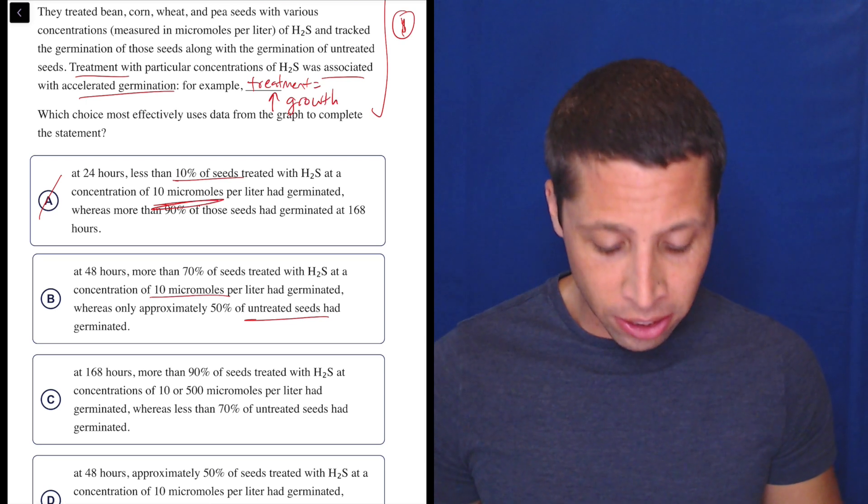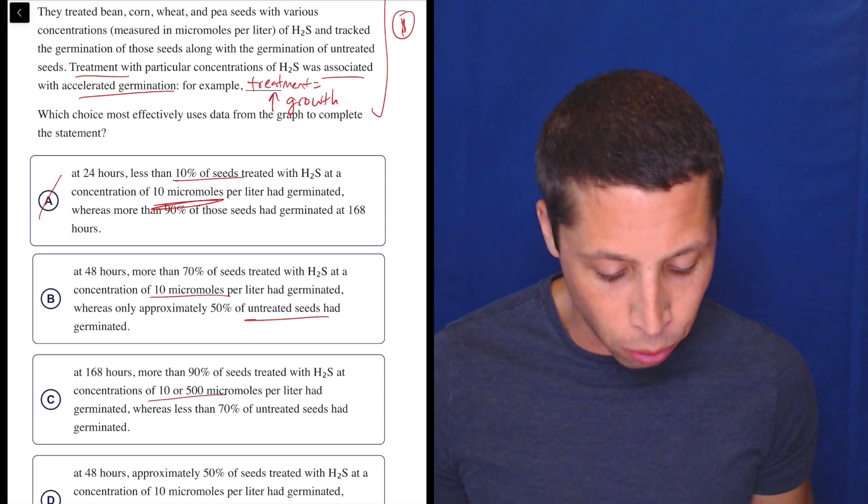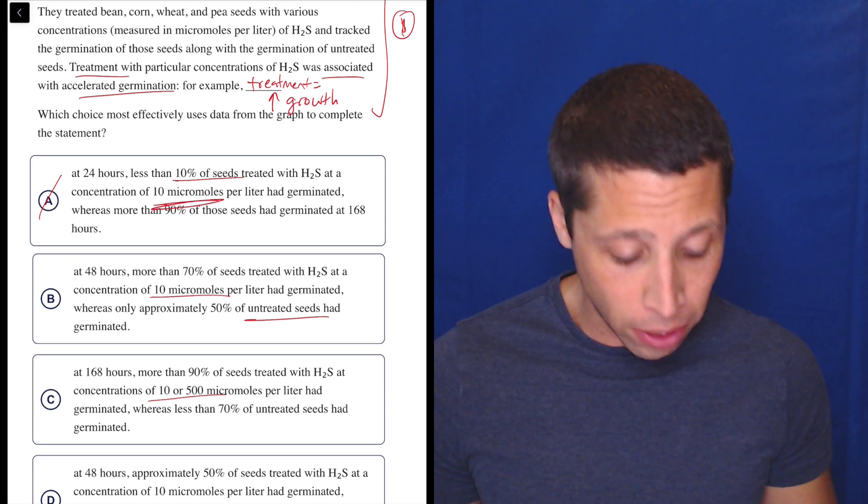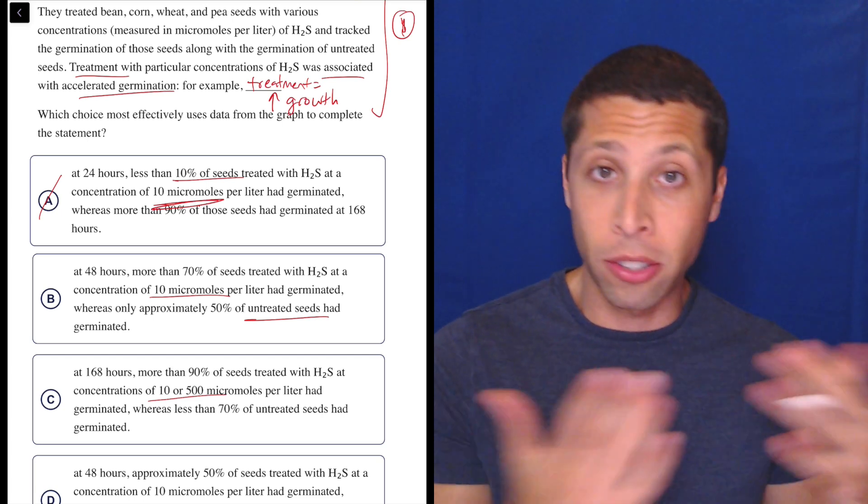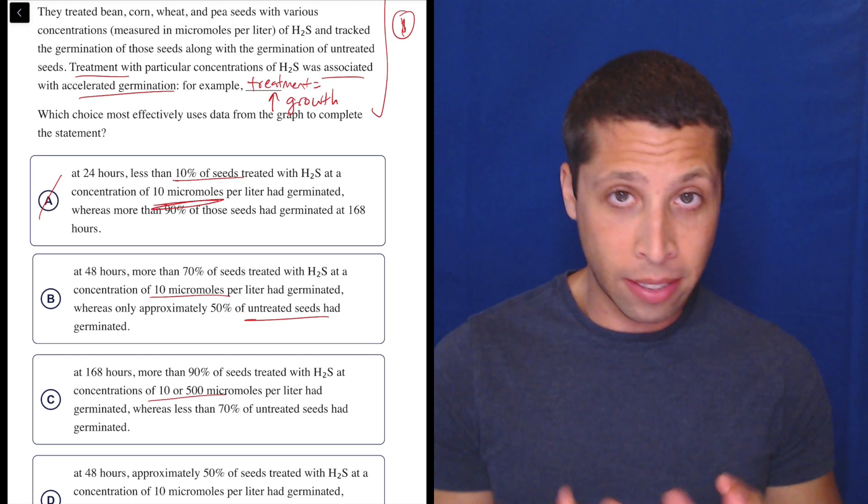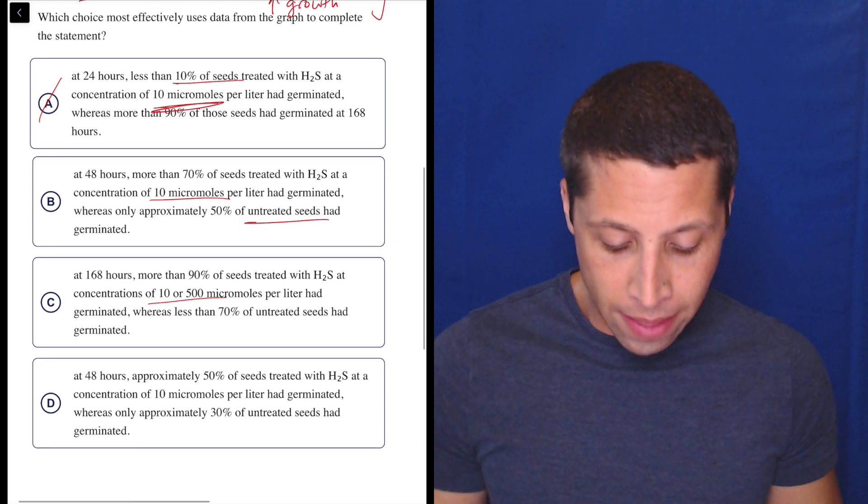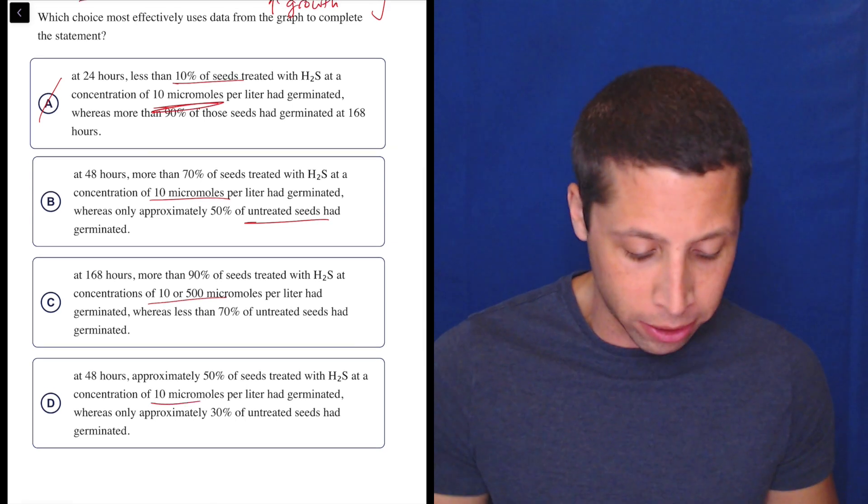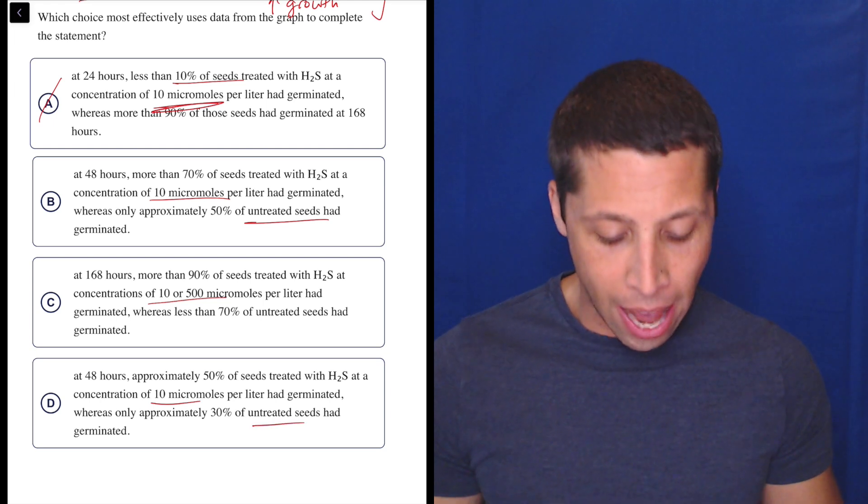Okay, let's just keep going and see. Choice C, at 168 hours, more than 90% of seeds treated with hydrogen sulfide at concentrations of 10 or 500 micromoles per liter had germinated, whereas less than 70% of untreated seeds had germinated. Okay, well, this is also comparing treatments to the untreated. So let's put it aside for now. Let's keep it, right? It doesn't seem wrong on its face.